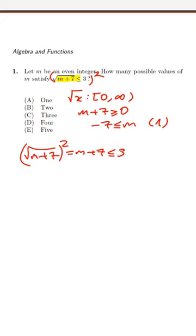So m+7 ≤ 9. We subtract seven from both sides and get m ≤ 2. Let's say this is equation (2). If we consider equations (1) and (2) together, we're gonna find...